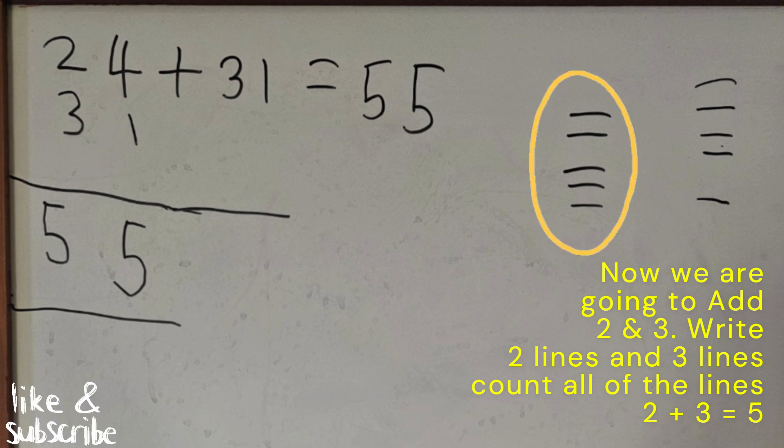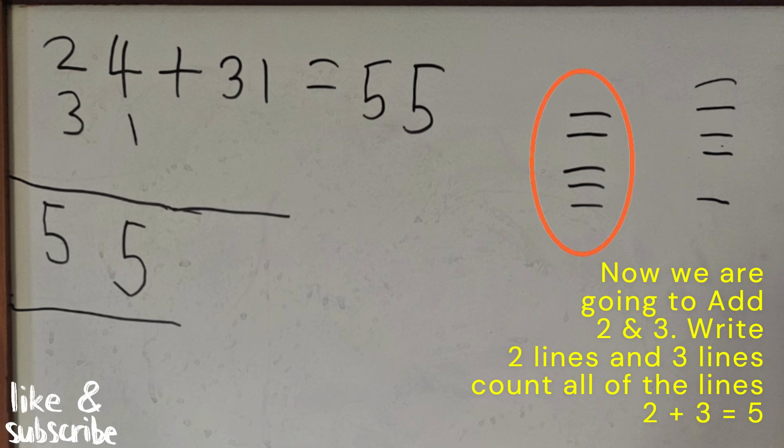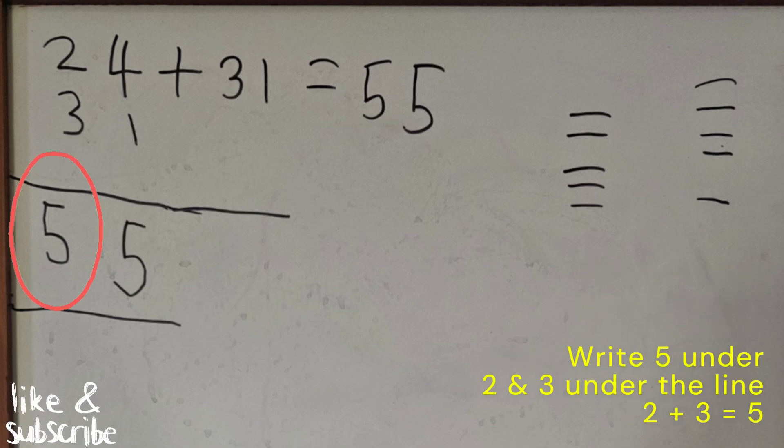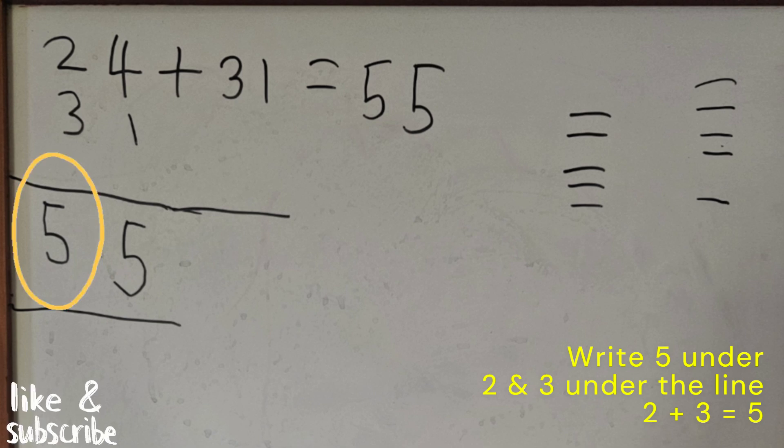Write 2 lines in three lines. Count all of the lines. 2 plus 3 equals 5. Write 5 under 2 and 3 under the line.